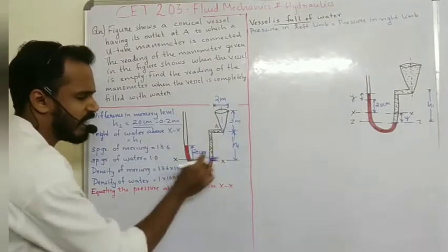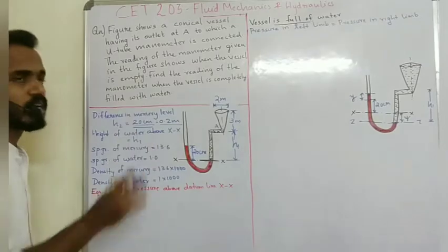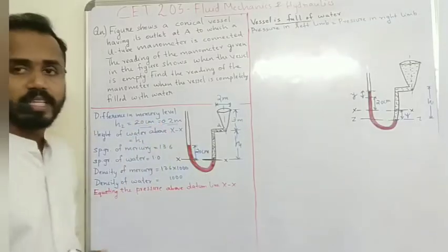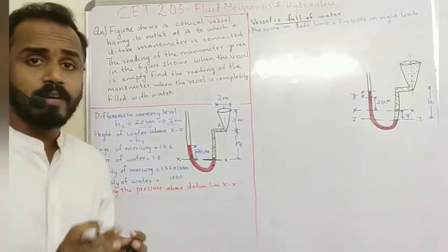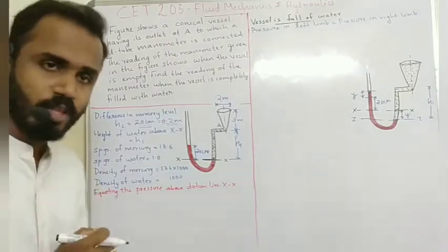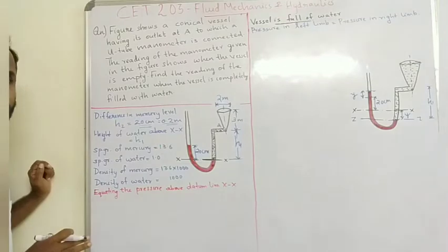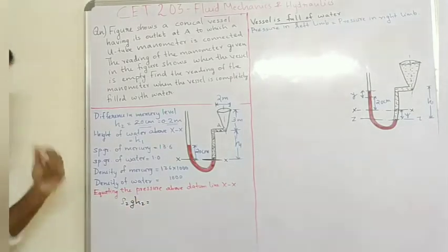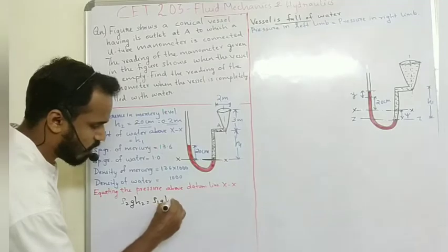The height of water above the x-axis is H1. The specific gravity of mercury is 13.6, so the density of mercury is 13.6 × 1000. The density of water is 1000. We equate the pressure above the datum line axis, balancing the left limb and right limb. Left limb gives ρ2·g·H2 and the right limb gives ρ1·g·H1.